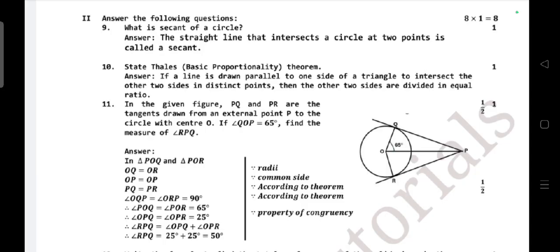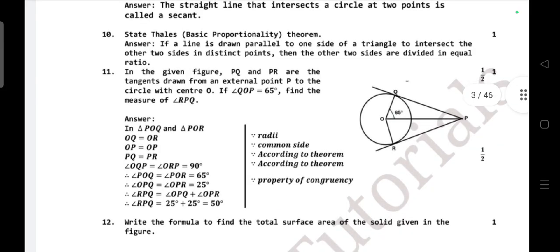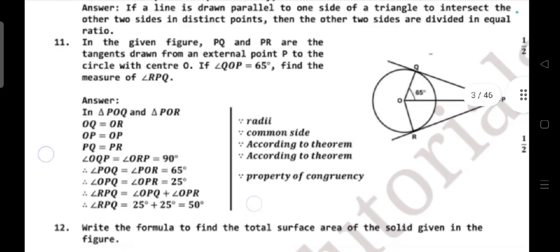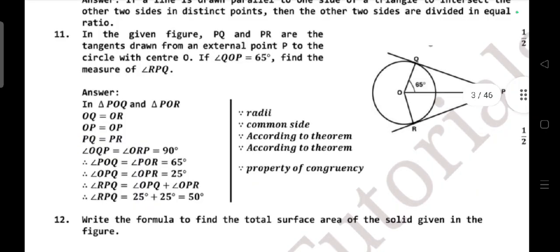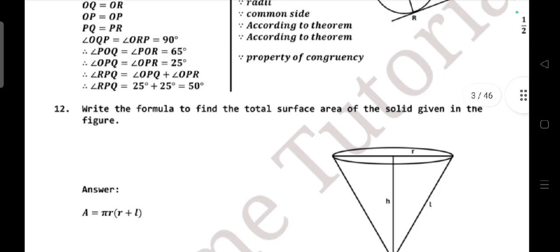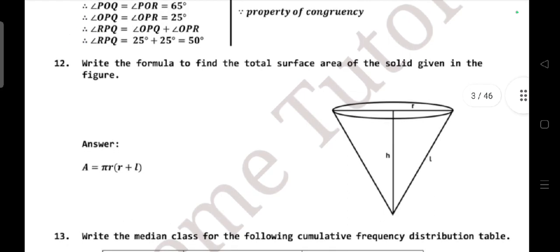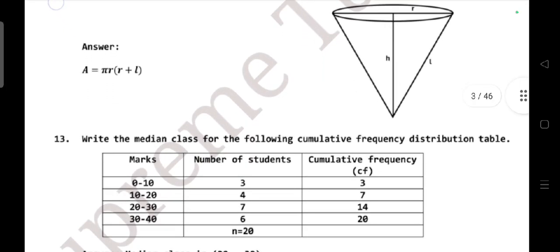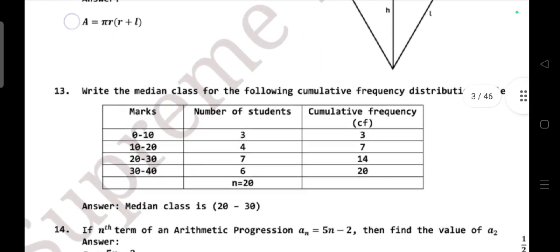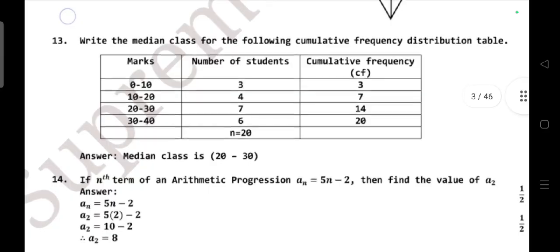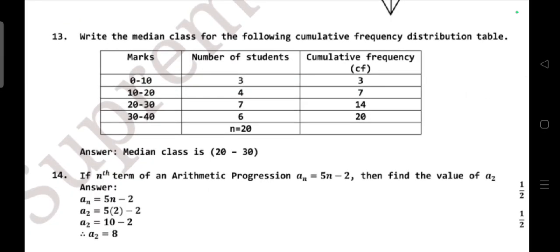In the given figure, PQ and PR are the tangents drawn from an external point P to a circle with center O. Angle QOP is 65°. Find the measure of angle RPQ. Question number 12: write the formula to find the total surface area of solid given in the figure. Answer is A = πr(r + l). Then write the median class for the following cumulative frequency distribution table. Median class is 20 to 30.